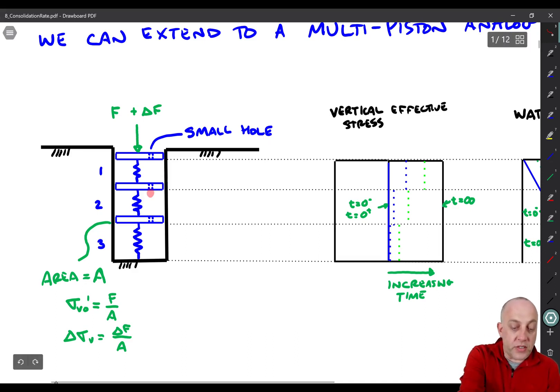So there's no hydraulic gradient pushing water out of chamber three. The excess pressure at this point is the same as the excess pressure at that point at time t equals zero plus. Therefore, there's also no hydraulic gradient pushing water out of chamber 2 into chamber 1.